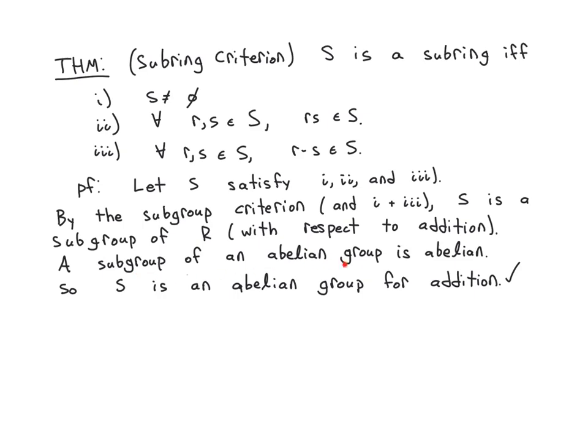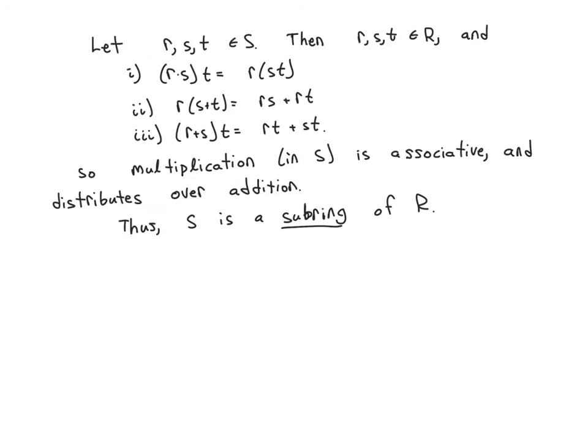And we already proved earlier in the course that a subgroup of an abelian group is abelian. So we also know that S is an abelian group for addition. Congratulations, that's the first axiom for being a ring, that it's an abelian group with respect to addition.